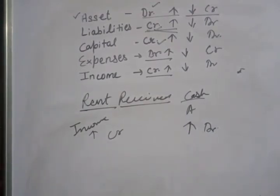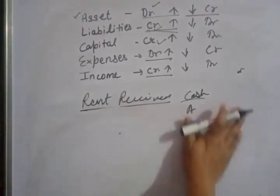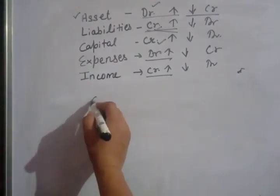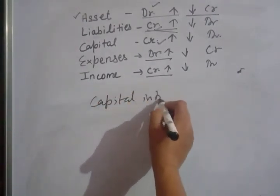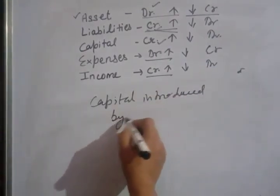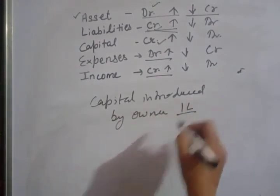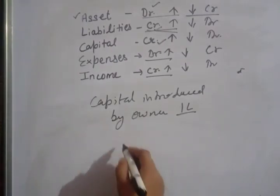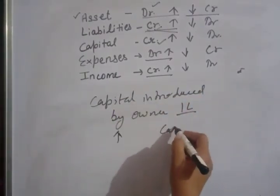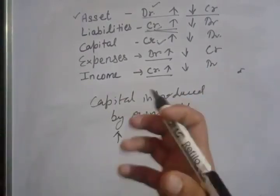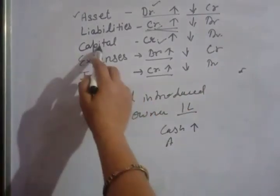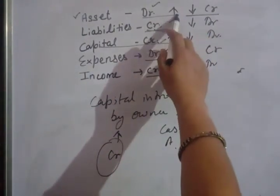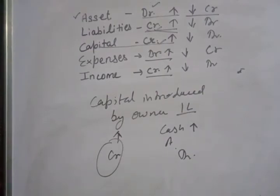Next example: Capital introduced by the owner. The owner has invested one lakh rupees. The capital is now in business. Capital is increased. Cash is also added into the business. Capital is increased — we will do credit. Assets are increased — we will do debit. So we credit the capital account and debit the cash account.